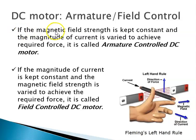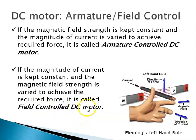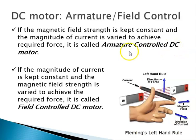If the magnetic field strength is kept constant and the magnitude of the current is varied to achieve the required force, it is called an armature-controlled DC servo motor. If the magnitude of the current is kept constant and the magnetic field strength is varied to achieve the required force, it is called a field-controlled DC motor. In our course we consider the armature-controlled DC motor and see how it can be used in a servo application.